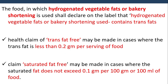Foods in which hydrogenated vegetable fats or bakery shortenings are used shall declare on the label that the hydrogenated vegetable fat or bakery shortening used contains trans fats. A health claim of 'trans fat free' may be made only where trans fat is less than 0.2 gram per serving. A claim of 'saturated fat free' may be made where saturated fat does not exceed 0.1 gram per 100 gram or 100 ml of food.